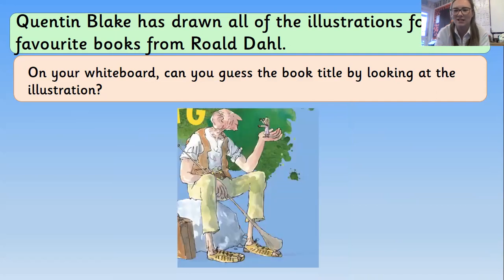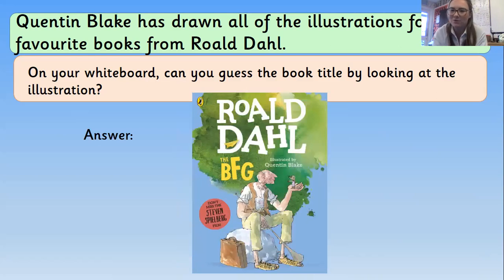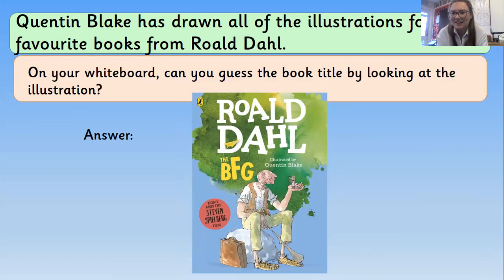This one's a nice easy one. What is the title of the book by Roald Dahl? Of course it was the BFG — the Big Friendly Giant. I love how Quentin Blake has drawn him here. He's got those big ears that take up basically his whole head, those big hands, and there's a little character in his hand which is Sophie.